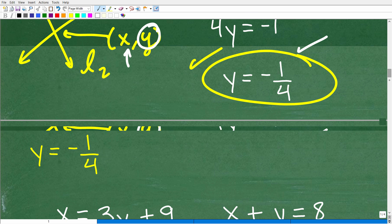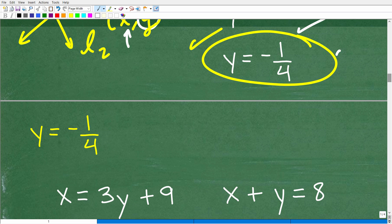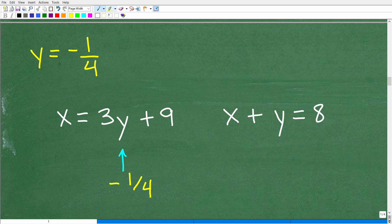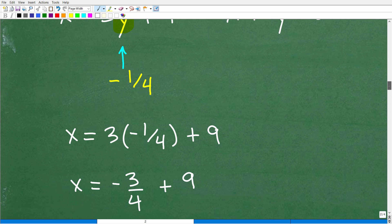So to get x, all we need to do is take our y answer, y is equal to negative 1 fourth, and just plug it into any one of the equations. The easiest one is this one because x is equal to 3y plus 9. So all I have to do is replace this y right here with negative 1 fourth and simplify. And I can get my x answer.